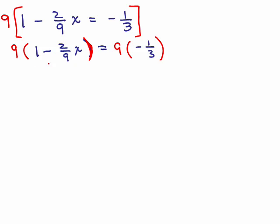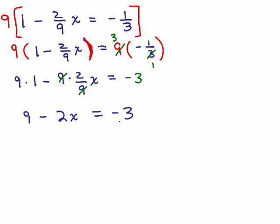An intermediate step is to write 9 times 1 minus 2 9th x and 9 times negative 1 3rd. And then do the distributive property. So I have 9 times 1 minus 9 times 2 9th x equals, now 9 times negative 1 3rd, we could simplify that, 3 goes into 9 three times, but I have it times a negative 1. So that's going to be negative 3. And over here we've got 9 minus 2x because the 9s cancel, which is why we multiply by the least common denominator is to get rid of all fractions. This is called clearing fractions, clearing the denominator. And so we get 9 minus 2x is negative 3.